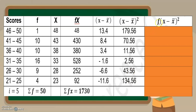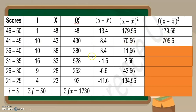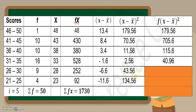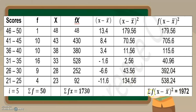For the last column, we have frequency times the square of x minus mean. Meaning to say, ang i-multiply na natin dyan is yung nakuha natin dito sa ika-anim na column, i-multiply lang natin siya with the frequency. So 1 times 179.56 is 179.56. 10 times 70.56 is 705.6. 10 times 11.56 is 115.6. 16 times 2.56. 9 times 43.56. 4 times 134.56. And then last, we will get the summation of f times the square of x minus mean, and that is 1,972. Remember this data because we're going to use this to get our variance and standard deviation.